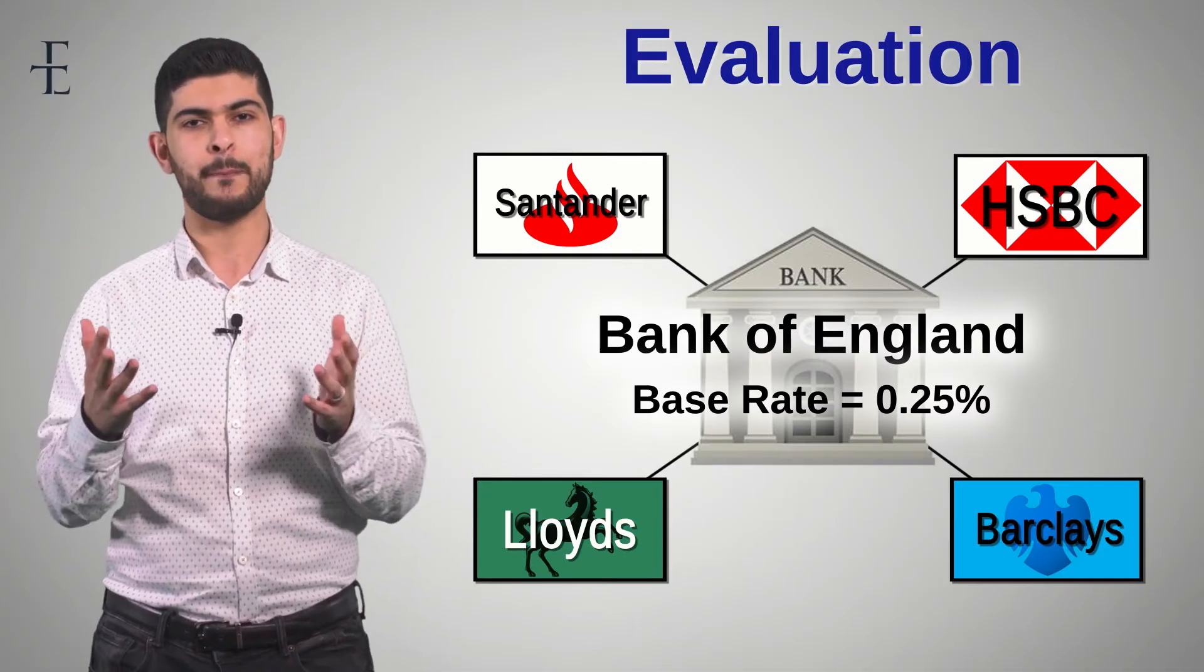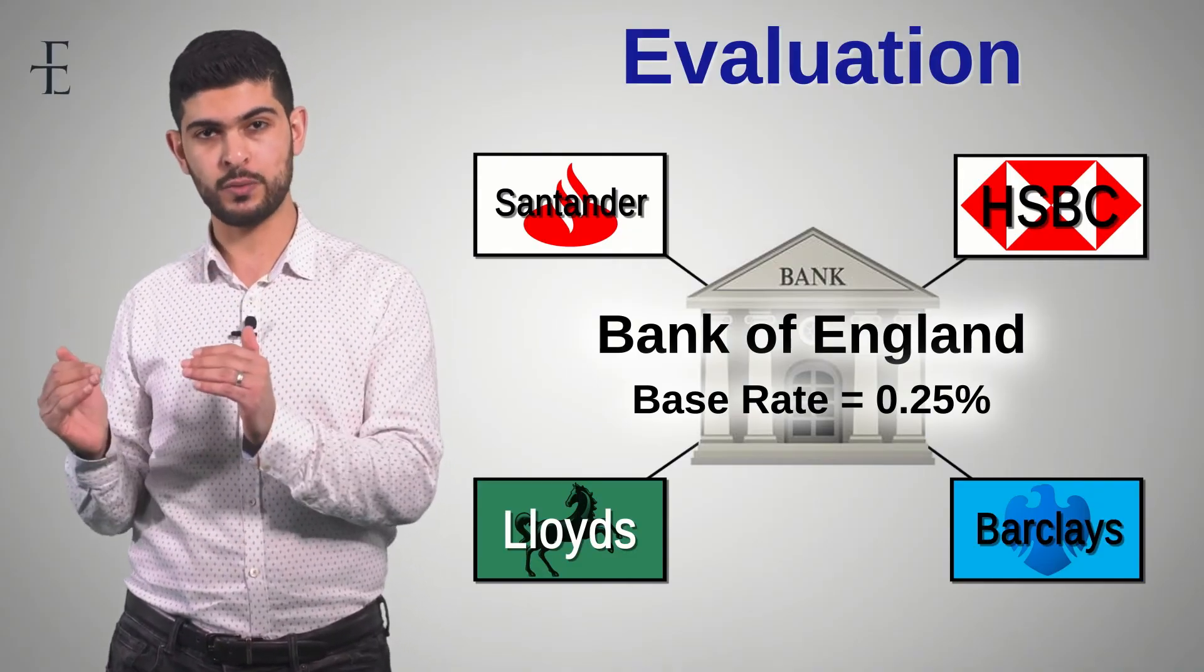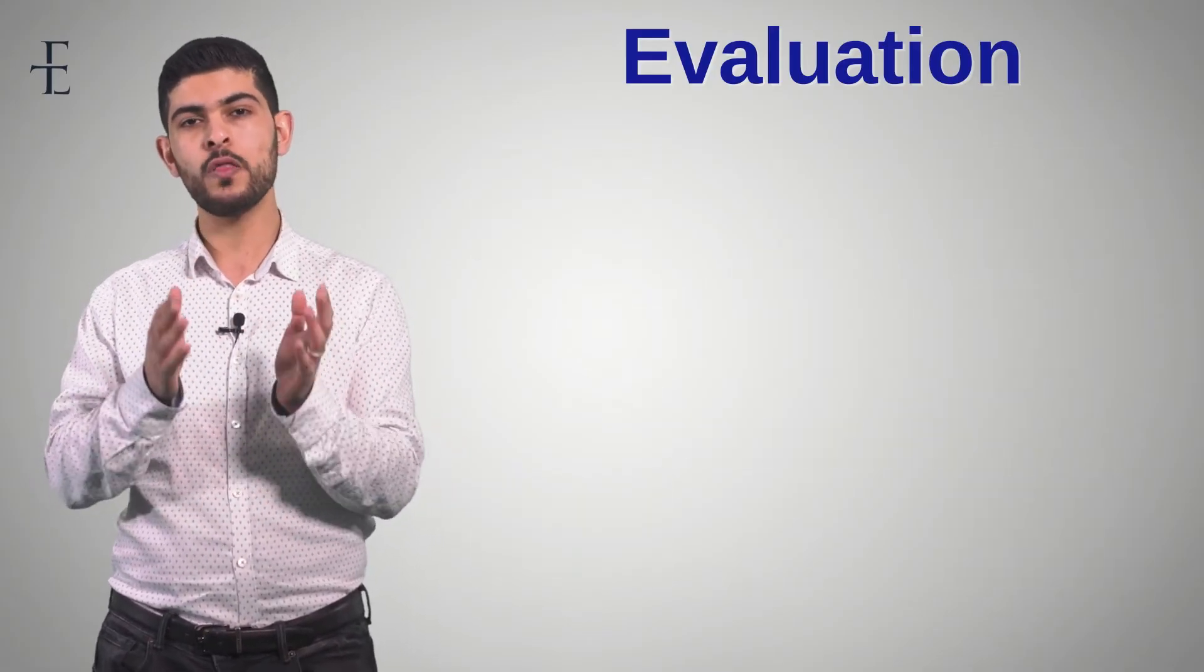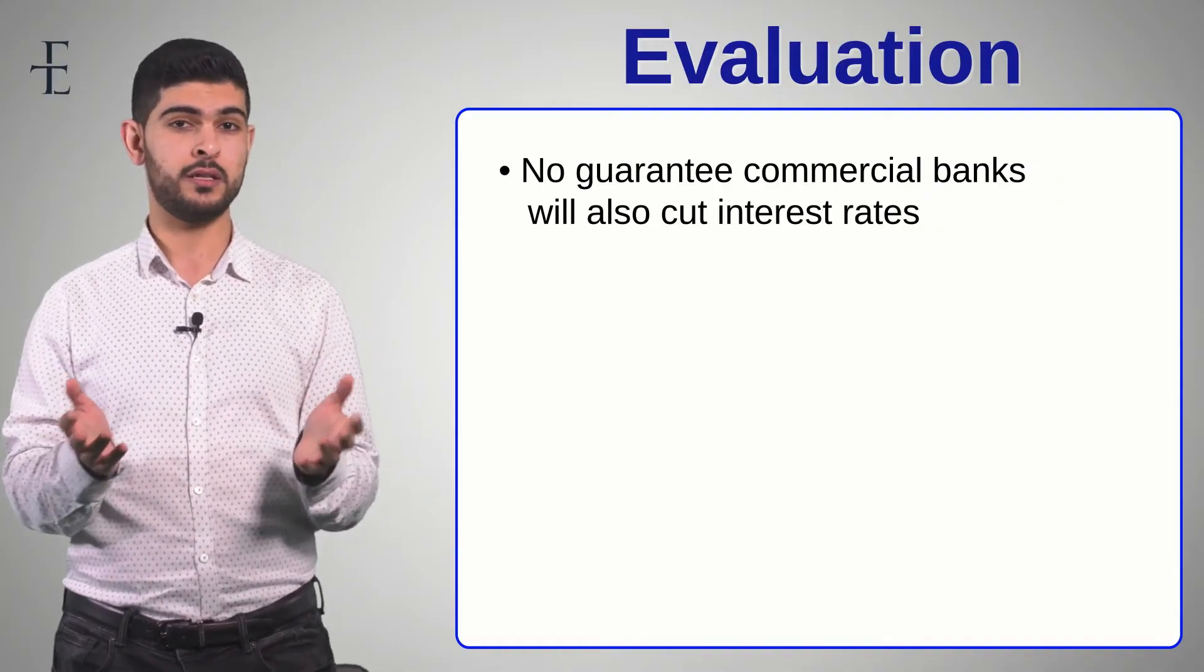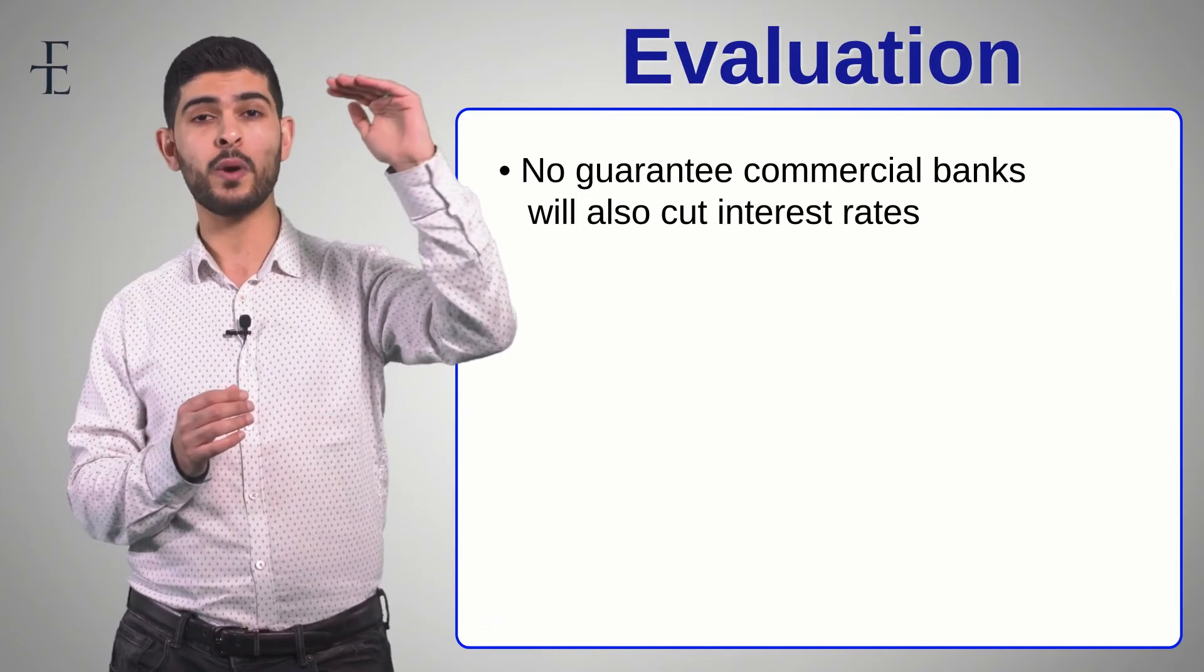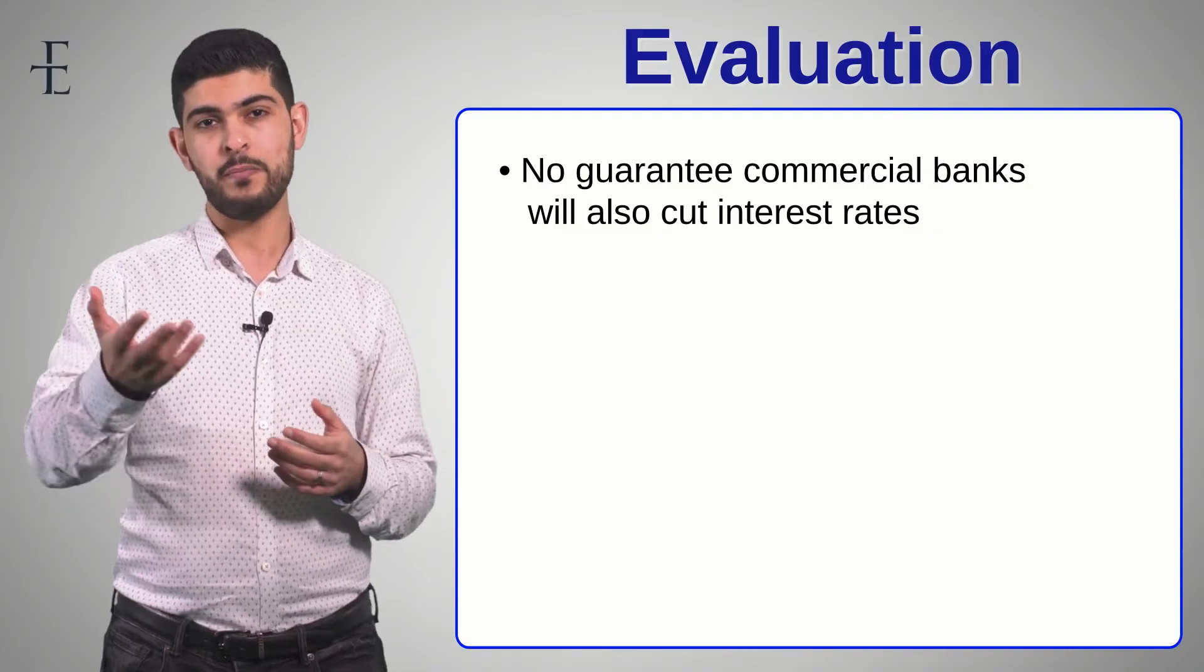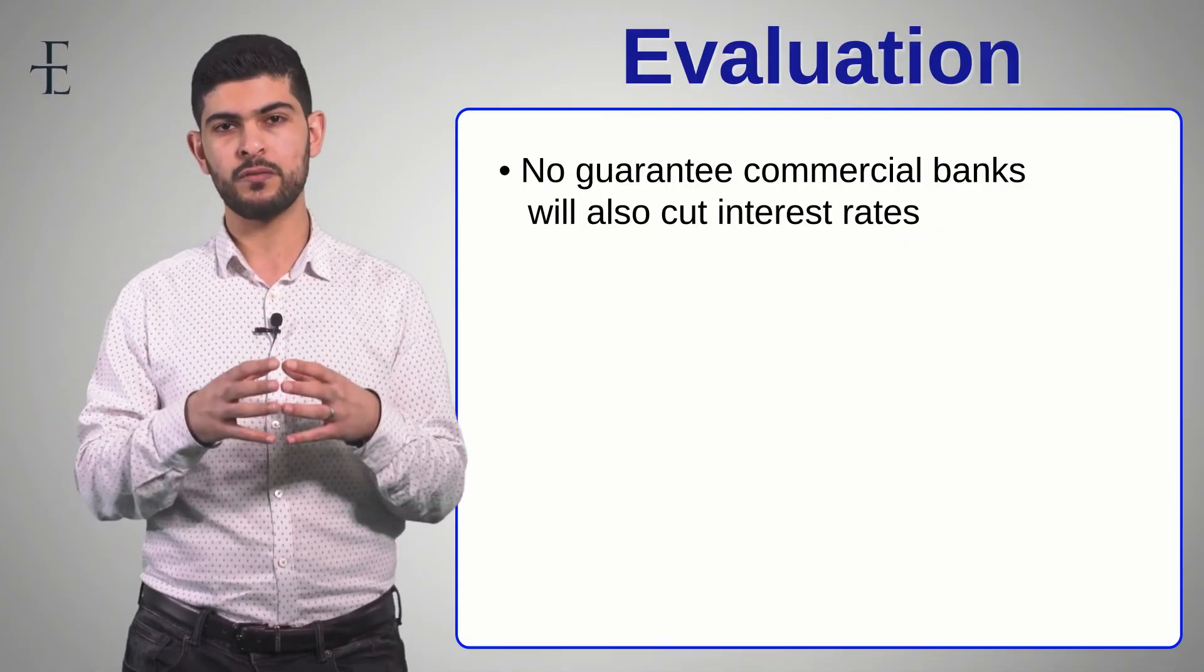Now, why is this significant? It is significant because unless the commercial banks also cut their interest rates when the Bank of England does, then it doesn't really have that big an impact on the economy. So the evaluative point is something along the lines of: however, there is no guarantee that the commercial banks will pass on the full benefits of the cut in the base rate to their customers in the form of lower interest rates. This actually happened, by the way, in 2009. So in the aftermath of the financial crash, the Bank of England interest rate at the time was 5%. They cut it down to 3% and then very quickly down to what was then a record low of 0.5%. Many of the commercial banks, though, didn't really alter their interest rates very much. That's a reflection of the fact that it doesn't matter if the base rate is particularly low. It's all about what the commercial banks do to their interest rates. So that's a really important opening evaluative point that you can always throw in.